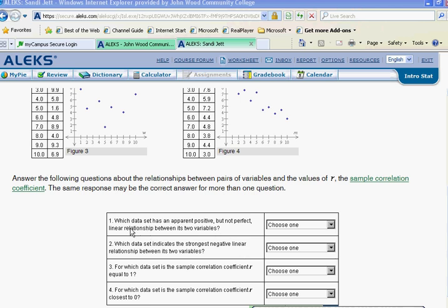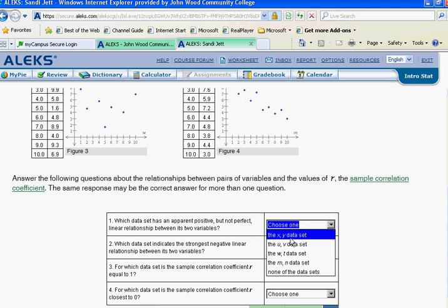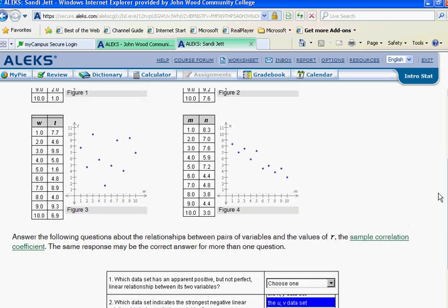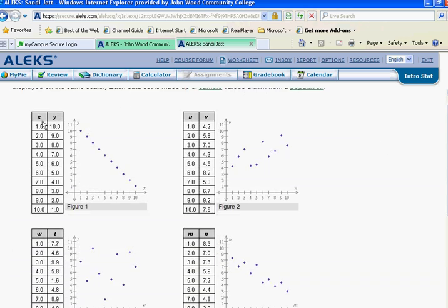Okay, now with the question: which data set has an apparent positive but not perfect linear relationship between two variables? What ALEKS seems to do with the answer is look at the data set that they have assigned the variables to, and those are listed here under the points. So this is somewhat positive but not perfect, so this answer, figure two, would be the one that I would want.